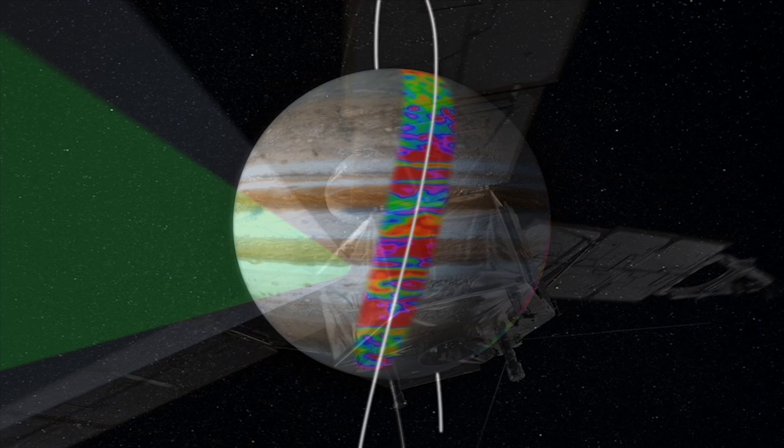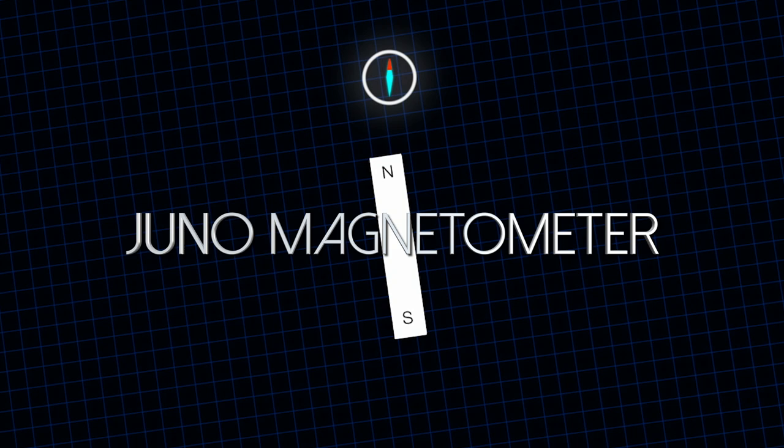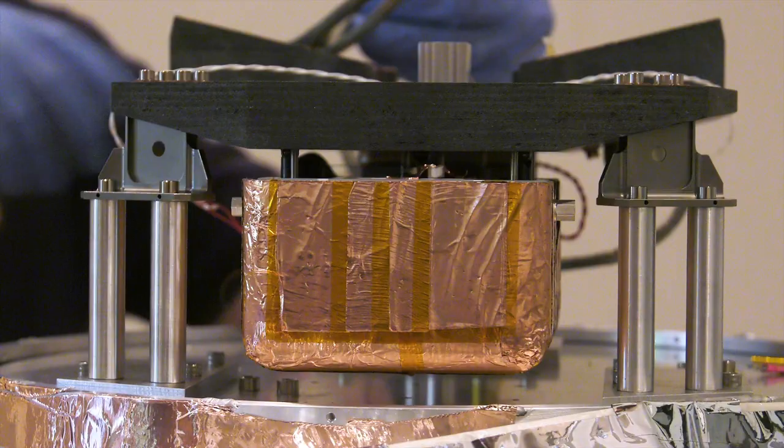A magnetometer is, it's best to think of it as a fancy compass. Unlike a compass that just records the direction of the magnetic field, our instrument tells you both what direction the field is in and what the magnitude is. And we can measure that very, very accurately to 100 parts per million.